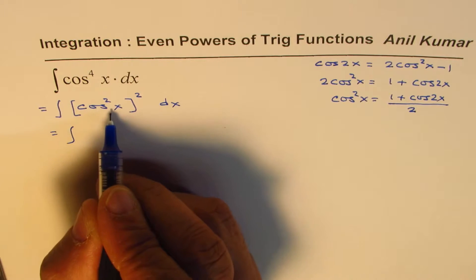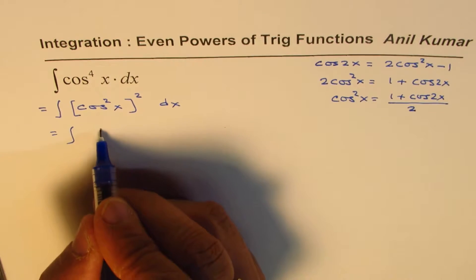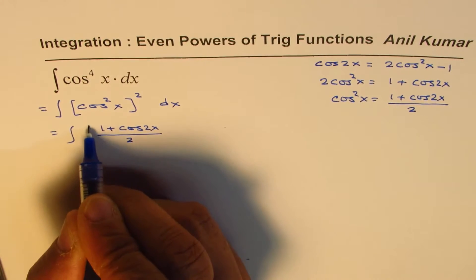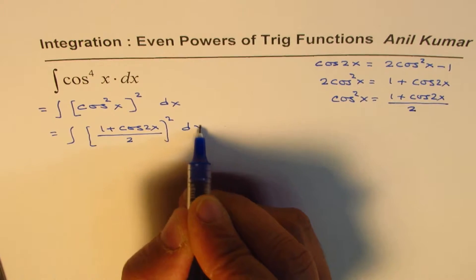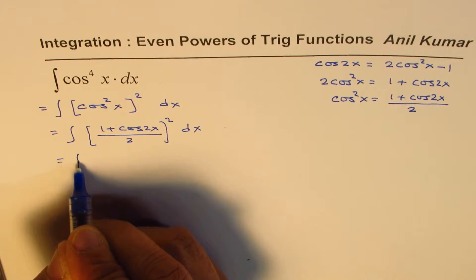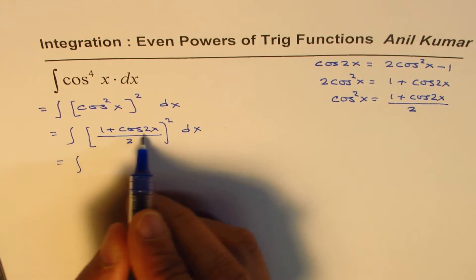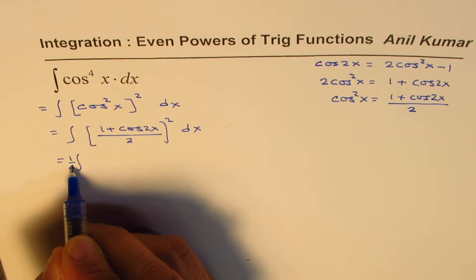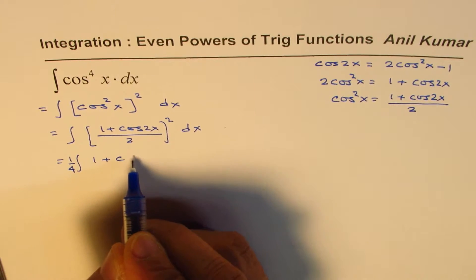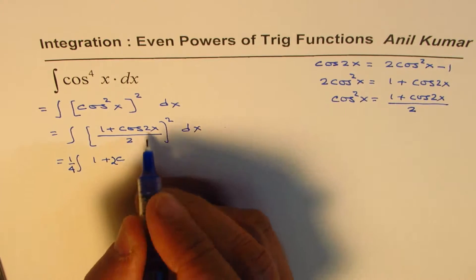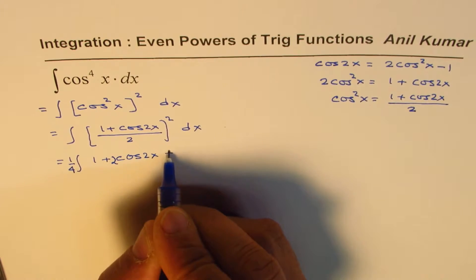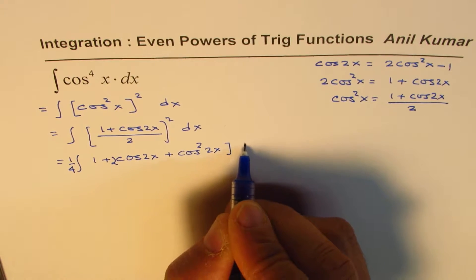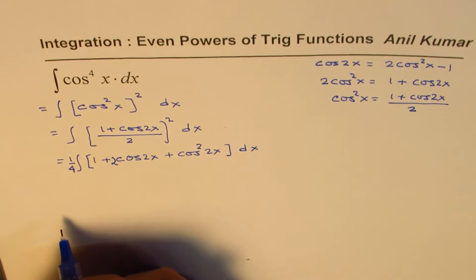Now cos²x = (1 + cos(2x))/2, so we'll square this. This gives us the integral of - expanding the numerator, the denominator becomes 4, so we bring out 1/4 and we have (1 + 2cos(2x) + cos²(2x)) dx. That's the expanded form.